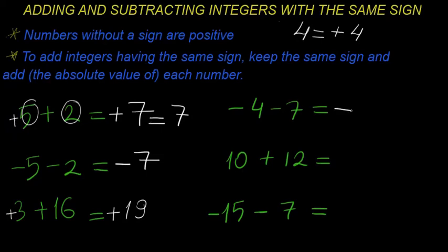In the next example, as you can see, we have negative and negative: negative four minus seven. The answer will be negative. Four plus seven equals eleven, so negative eleven is the answer.